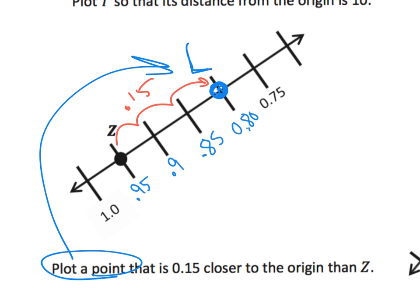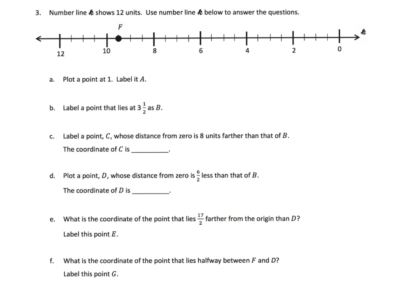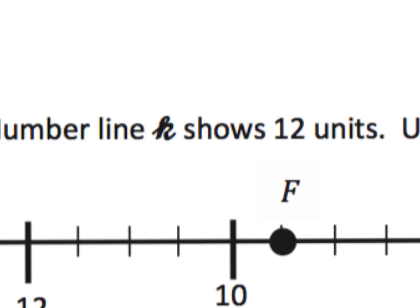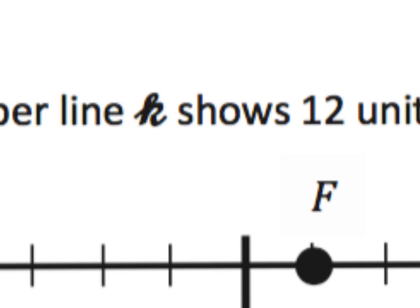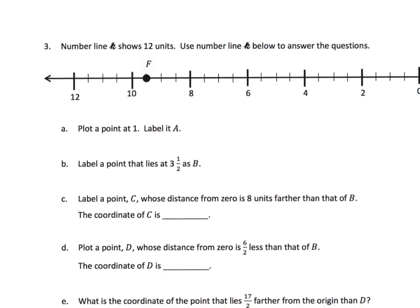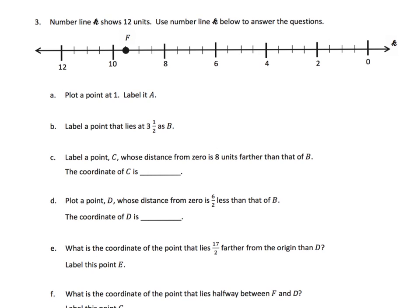Here it says number line K, and now what's interesting is we traditionally use cursive letters to indicate lines, and so that's why this K looks so different. Now zoom in so you can see, that's why we use this cursive. It's traditional, there is no law, it's just traditional that we do it that way. And the number line K shows twelve units, so we've got zero over to twelve. So I want you to notice one thing: this number line is kind of like going backwards than what we would customarily expect.